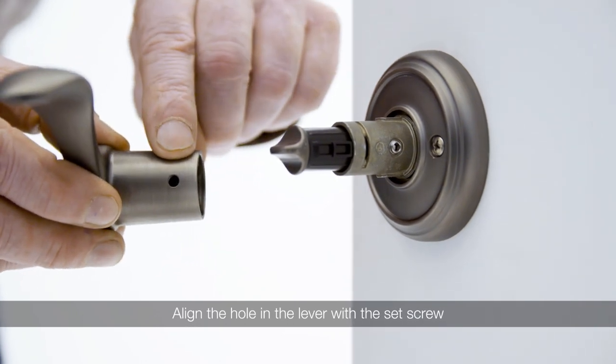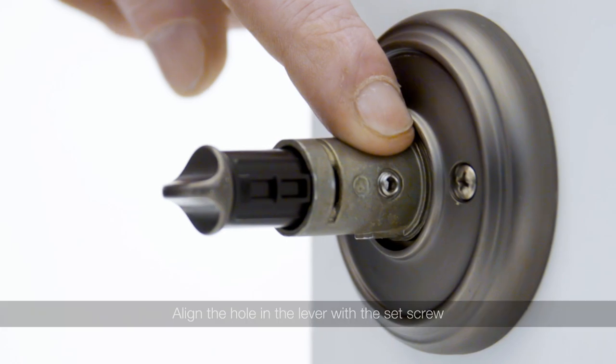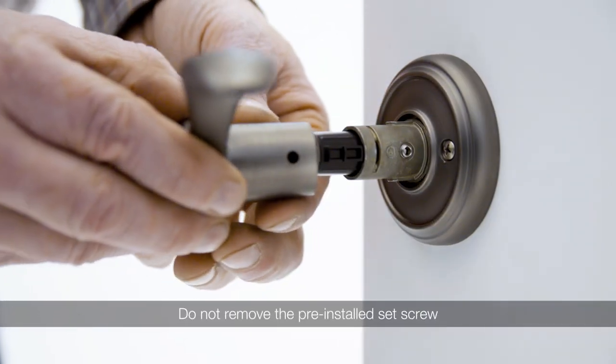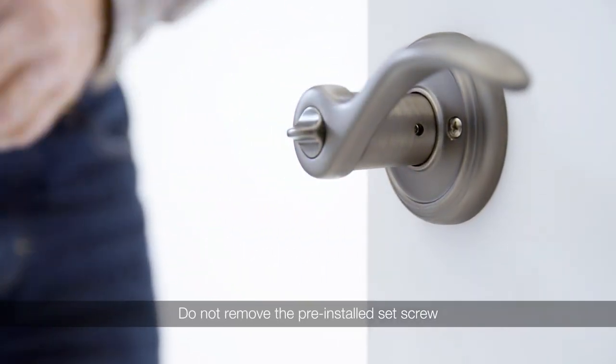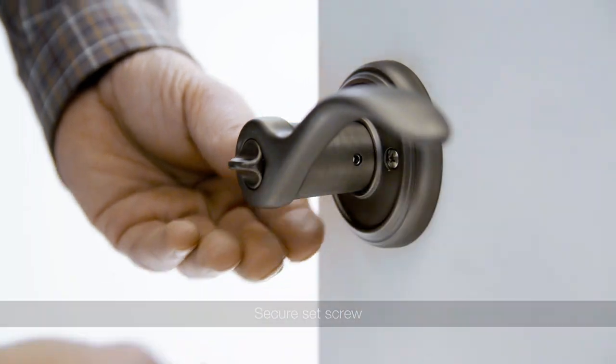Install the interior lever first by aligning the hole in the lever with the set screw. Do not remove the pre-installed set screw. Insert the Allen wrench into the side hole to locate the pre-installed set screw. Turn clockwise to tighten.